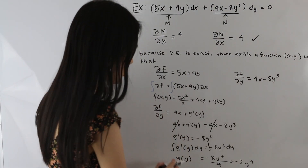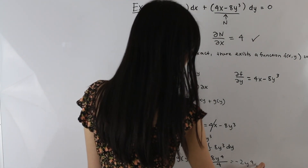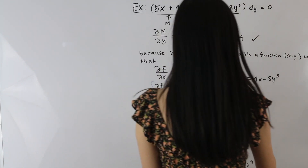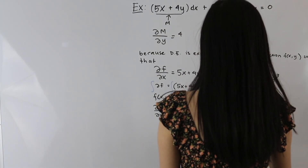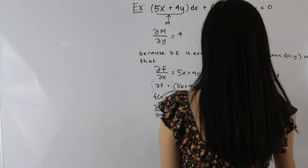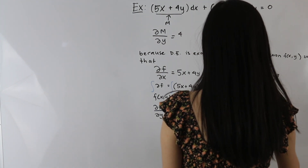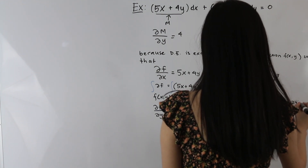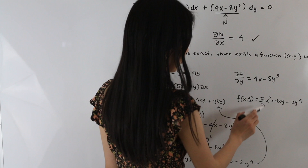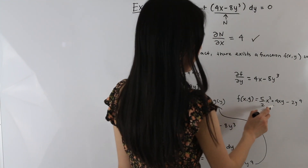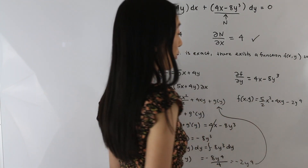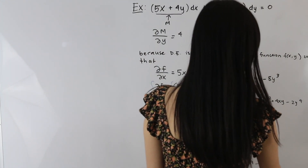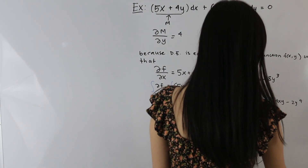Now that we know what g(y) is equal to, we plug it into our equation for f(x, y). We get f(x, y) = (5/2)x² + 4xy − 2y⁴. We can also write this in implicit form and set the whole thing equal to constant c.